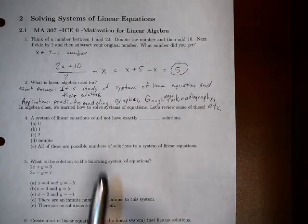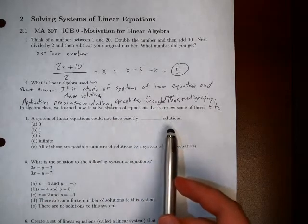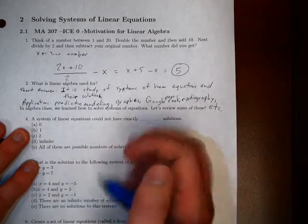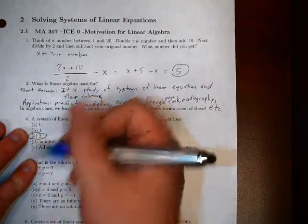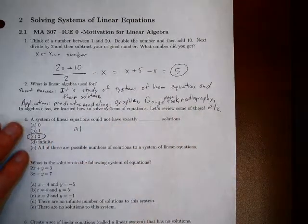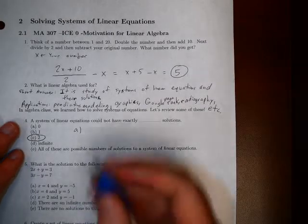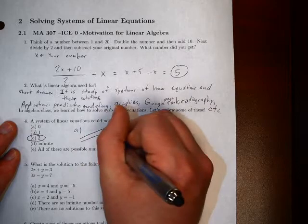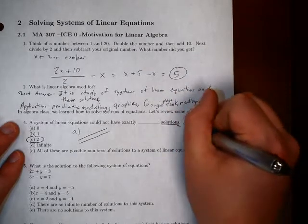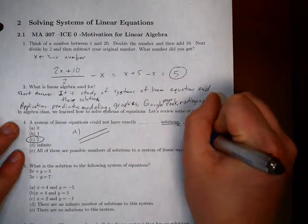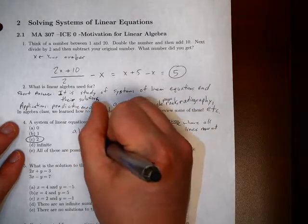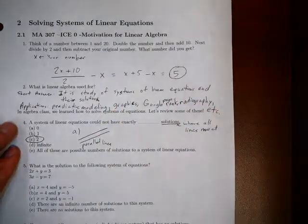So in algebra classes, in high school hopefully, we've learned how to solve some systems of equations. So let's review some of the things we should hopefully know. A system of linear equations cannot have exactly two solutions. So let's think about this for a second. If we want to look at a, a is saying that there's no way to have multiple lines and have no solutions. So here, what we're doing is we're taking a look at some lines. And in order to have a solution, it's where all of your lines meet.